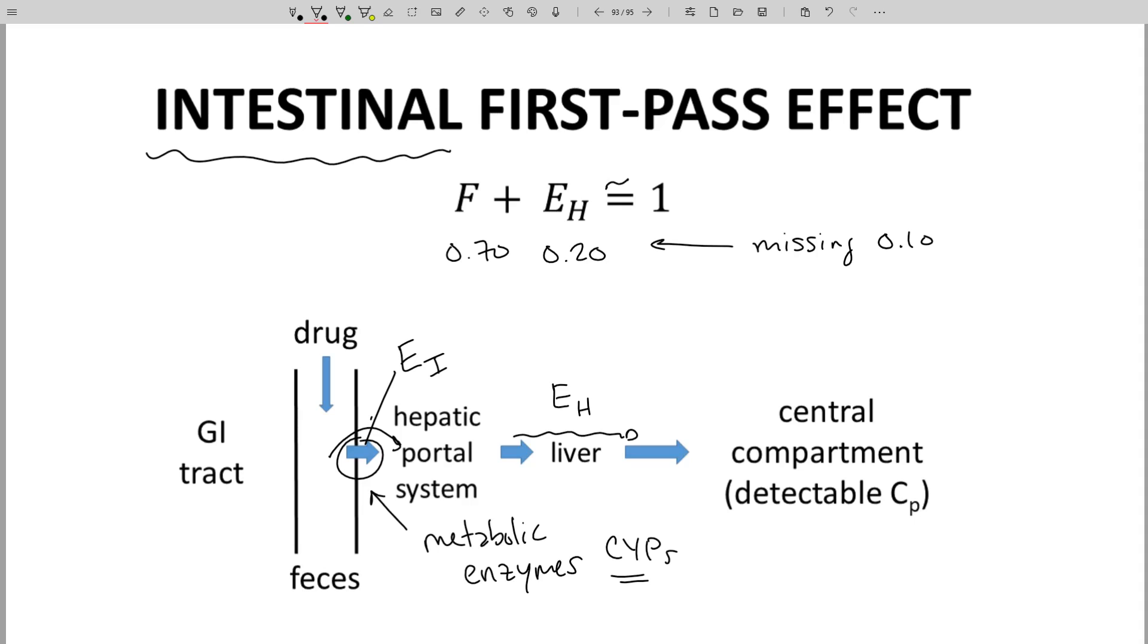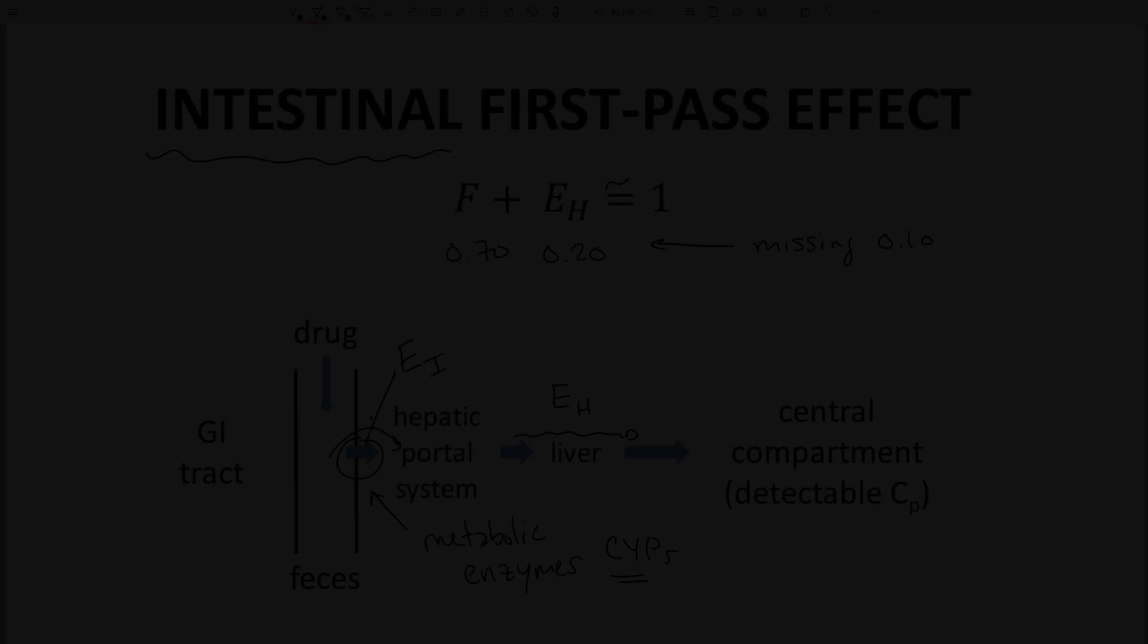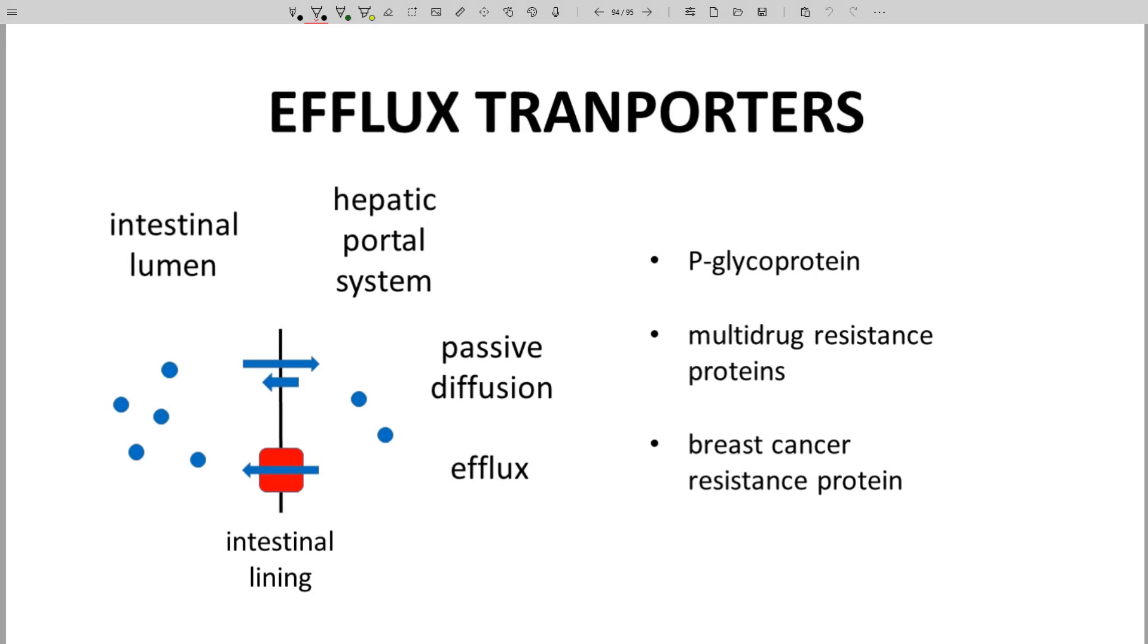Researchers have come to appreciate the importance of the intestinal first-pass effect over the past 15 to 20 years. The intestinal wall has another trick to play with absorption. We think of drugs crossing the intestinal wall through passive diffusion.